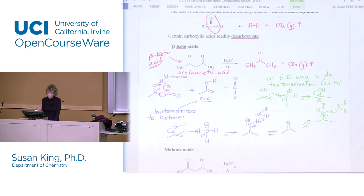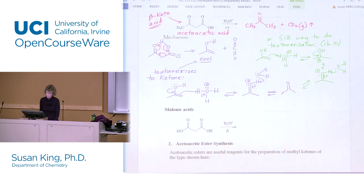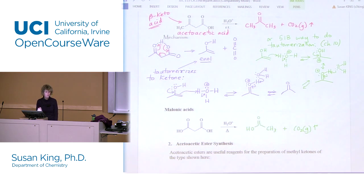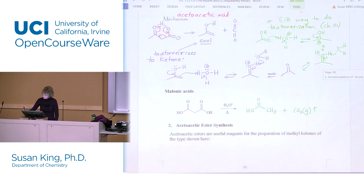So we go from acetoacetic acid to a ketone. Malonic acids also readily decarboxylate, though you do need a little heat — unlike acetoacetic acid which goes at room temperature. This is the dicarboxylic acid type. It gives you a carboxylic acid (acetic acid derivative) plus CO2. The mechanism looks very much the same except you'll have a hydroxyl on one side rather than a methyl.